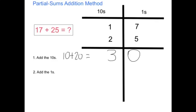The next step is to add the ones. In the ones place I have a 7 and a 5. So I add 7 plus 5, which is equal to 12. In the number 12, I put the 1 on the tens side and the 2 on the ones side.